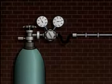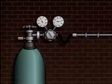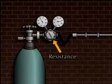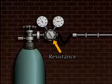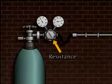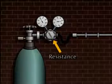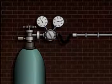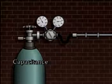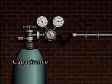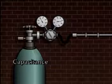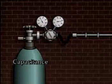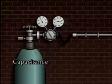For example, in this simplified gas system, the resistance is caused primarily by a valve that opposes the flow of gas from a pressurized cylinder. The capacitance, or the ability of the system to store energy, depends on the storage capacity of the cylinder.